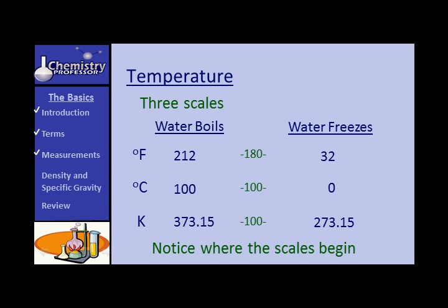Notice where the scales begin. At 0 on the Celsius scale, water freezes. At 0 on the Kelvin scale — absolute zero — all molecular motion is thought to cease. But at 0 on the Fahrenheit scale, water does not freeze. Isn't it odd that the Fahrenheit scale has 32 degrees as the freezing point of water? At 0°F it is the freezing point of a particular salt solution. The Fahrenheit scale has a fascinating history — let's have a look at it.